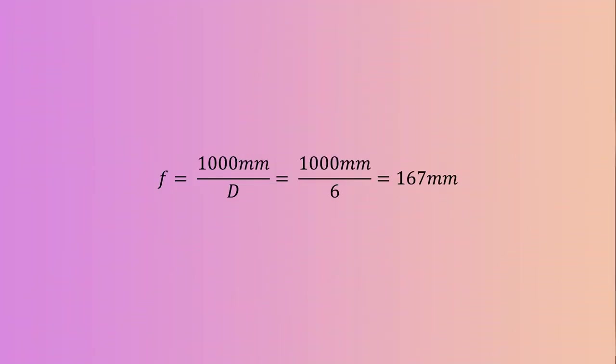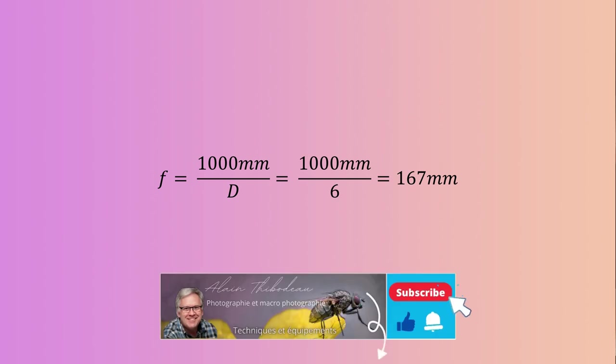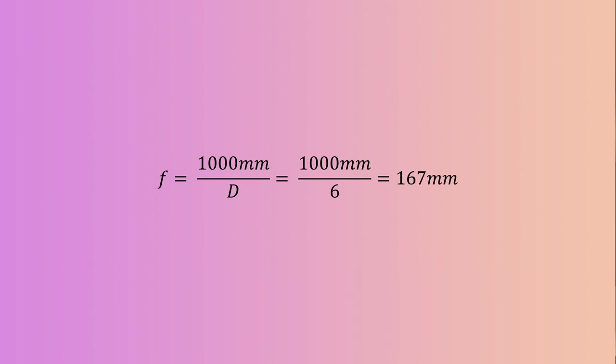And according to the previous formula, we can know the new focal length of this assembly by using the equation focal length equals 1000 divided by the diopter. Here we have 1000 divided by 6 equals 167 mm for the new lens assembly.